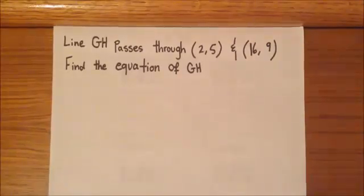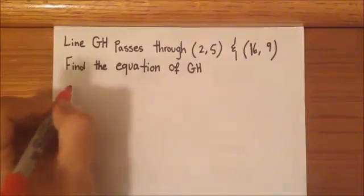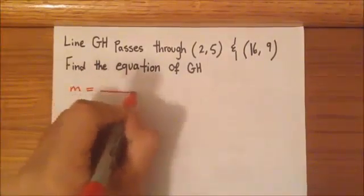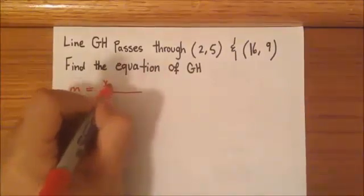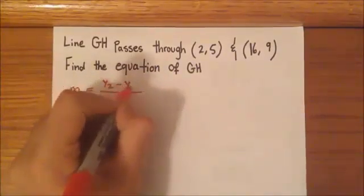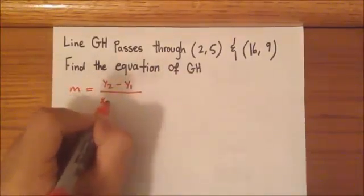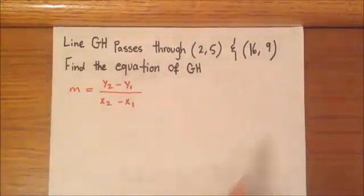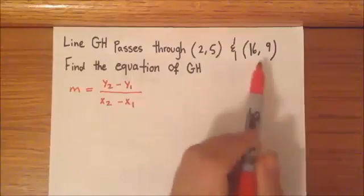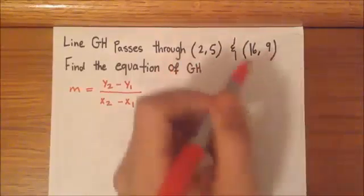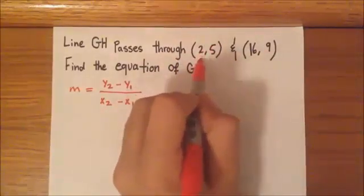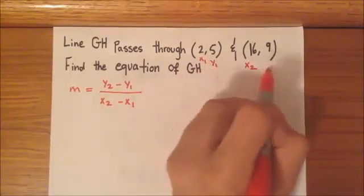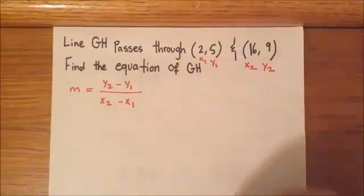So in order to do that, we have to write the formula. So it says m equals y2 minus y1 over x2 minus x1. And then we have to name our coordinates. It doesn't matter which one we pick but I'm just going to go with x1, y1 for this one and then x2, y2 for this one.